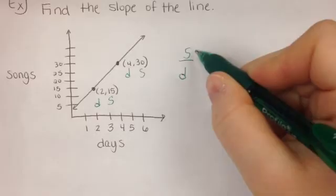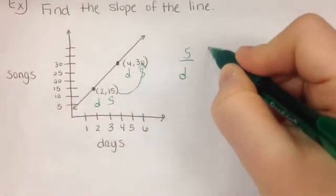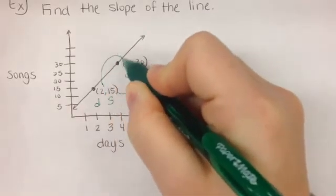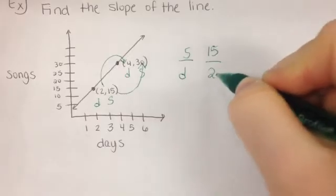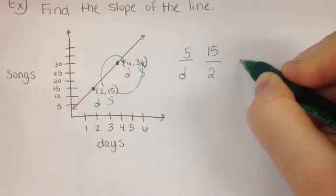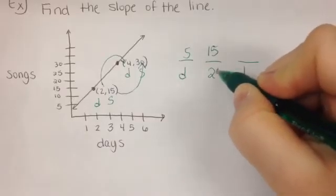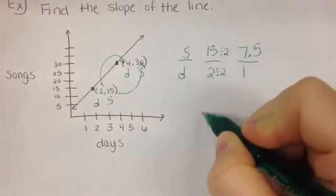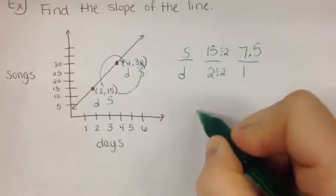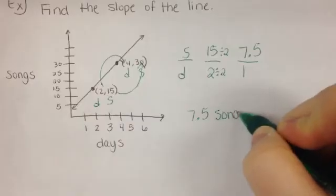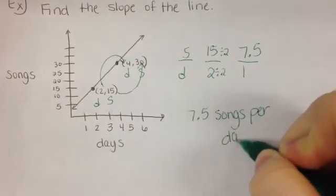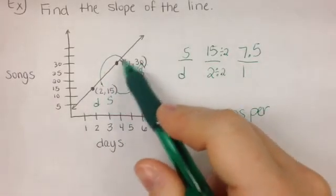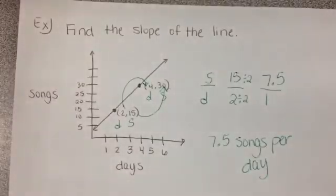Let's see how we did. How did the songs change? 15 to 30. How did the songs change? By 15. And how did the days change? 2 to 4 is by 2. What did you do next? Find your unit rate. Divide by 2. 7.5. And what does this mean in words? 7.5 songs per day. The rate of change was 7.5 songs per day. The songs changed by 15. The days changed by 2. So, the slope of the line is 7.5. Nice job.